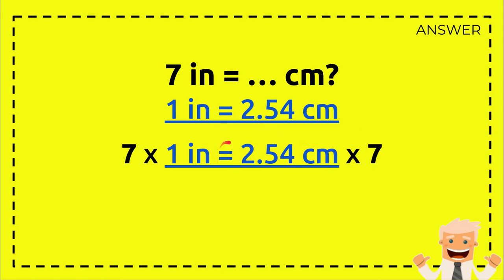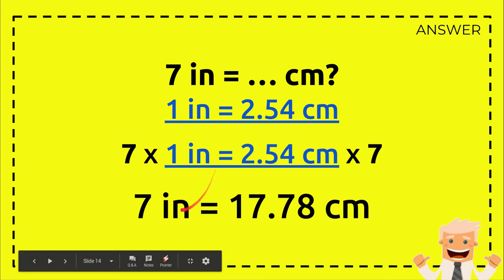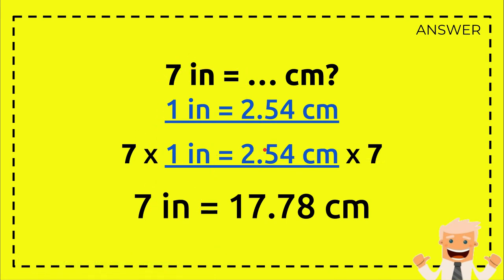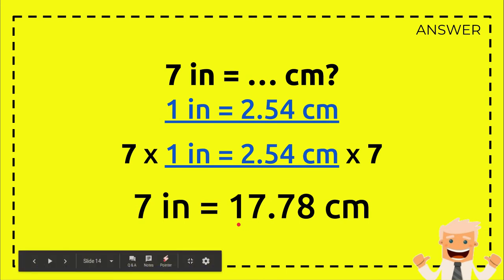So it makes it equals, right? So 7 times 1 equals 7, right? 7 times 1 equals 7 inch, just like the question, and 7 times 2.54 centimeters equals 17.78 centimeters.